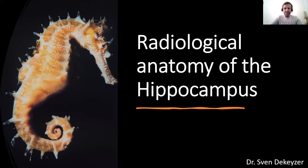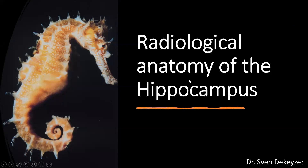Hello, my name is Sven de Kayser. I'm a neuroradiologist at the University Hospital of Ghent in Belgium. This session is going to be about radiological anatomy of the hippocampus. The hippocampus is a very small anatomical structure located medially in the temporal lobe, but despite its small size, it is a functionally very important structure, as it is responsible for, amongst other things, the consolidation and formation of our long-term memories.